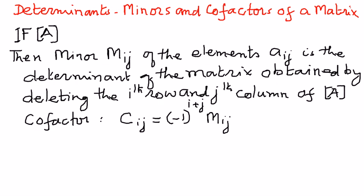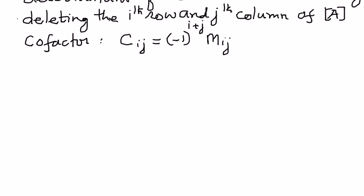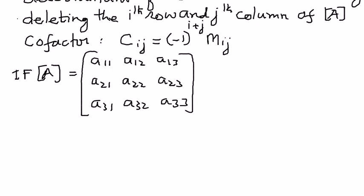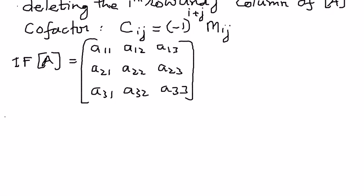So we will use the definition of minors and cofactors and try to understand these basic concepts with respect to an example. If A is a square matrix with elements A11, A12, A13 in the first row; A21, A22, A23 in the second row; and A31, A32, A33 in the third row, then we can write the minors as follows.